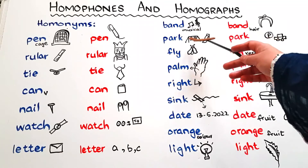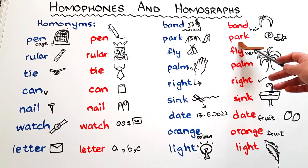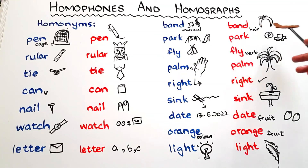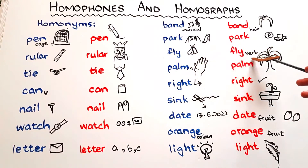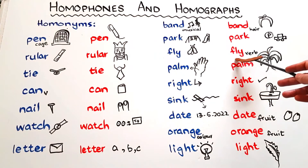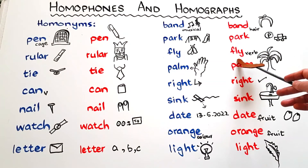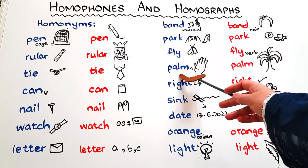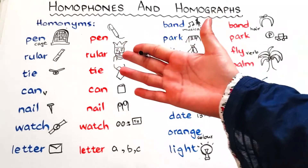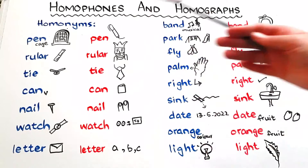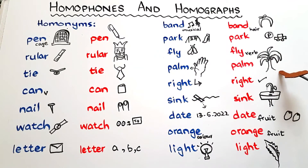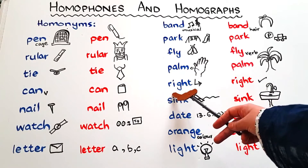The next word is 'park' — a noun, a place where children play — and 'park' as a verb, as in 'you can park your car here'. 'Fly' — a noun, a house fly — and 'fly', a verb, as in 'I want to fly up high'. 'Palm' — this side of your hand is called a palm — and a palm tree, like a coconut palm or a date palm.